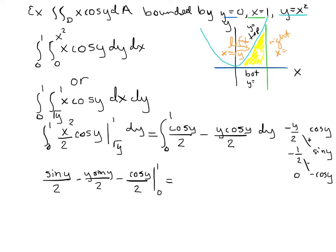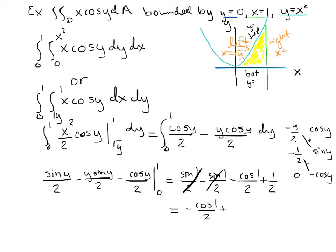Taking derivatives and integrals diagonally: I get −y·sin(y)/2, and then with three negatives in the next term, minus cos(y)/2. Evaluating from 0 to 1: plugging in 1 gives sin(1)/2 minus sin(1)/2 minus cos(1)/2 — those sine terms cancel. Plugging in 0: sin(0) = 0, so those terms vanish, and cosine(0) = 1 gives +1/2. The final answer is −cos(1)/2 + 1/2.